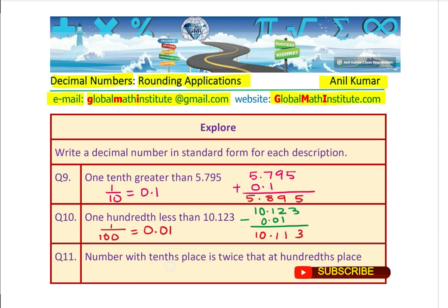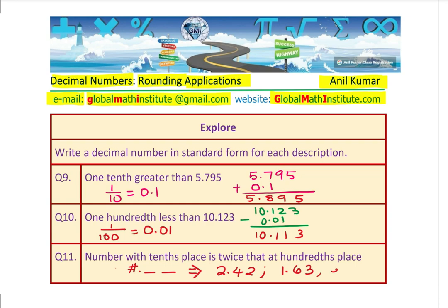The last question is: a number whose tenths place is twice that in the hundredths place. You have to write only one number, and you could write any number. For example, the tenths place is here and the hundredths place is here. If I write the tenths digit as four, then the hundredths place will be two — half of four. You can write many such numbers. It doesn't matter what you write before the decimal — it could be anything — but we're focused mainly on the tenths and hundredths places and the relation given.